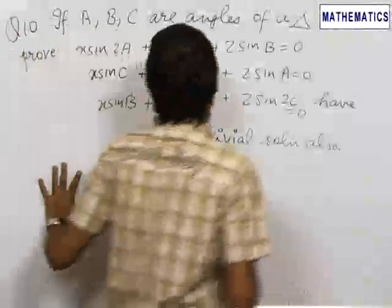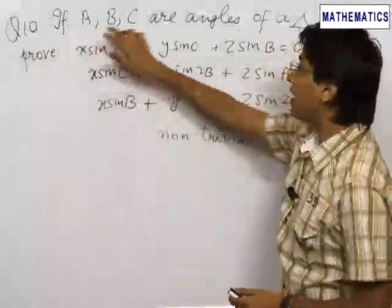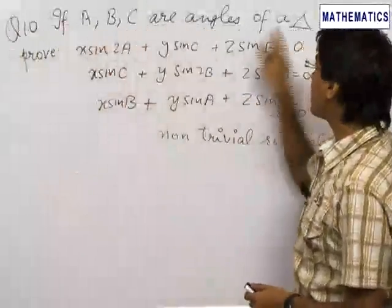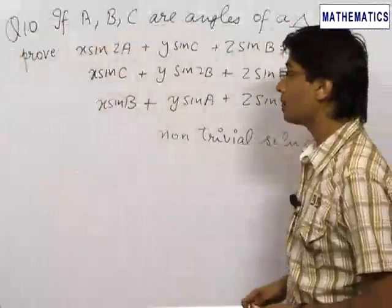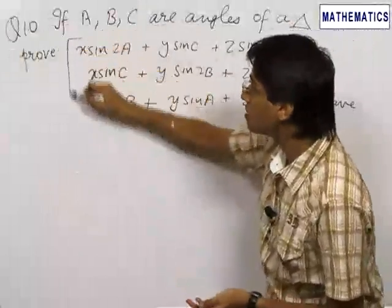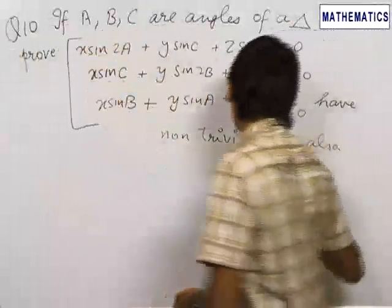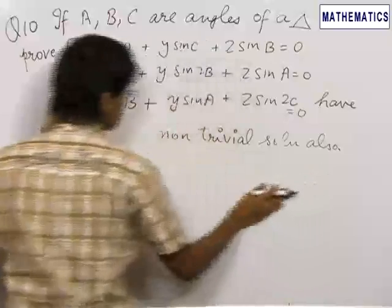In our next problem, we are given that A, B and C are the angles of a triangle. We need to prove that the system of these three equations has a non-trivial solution.